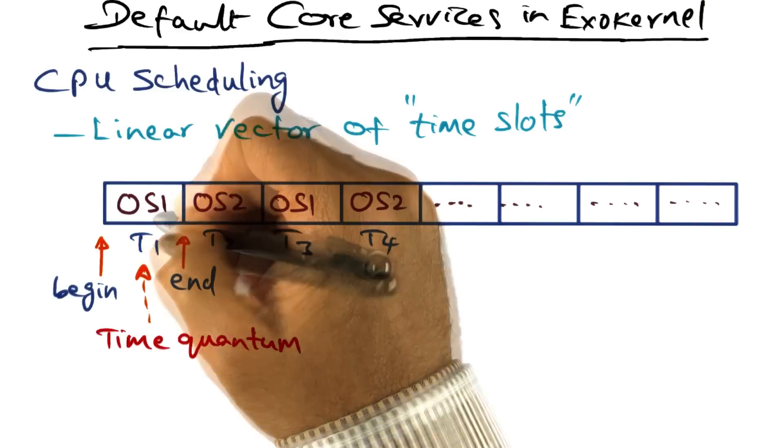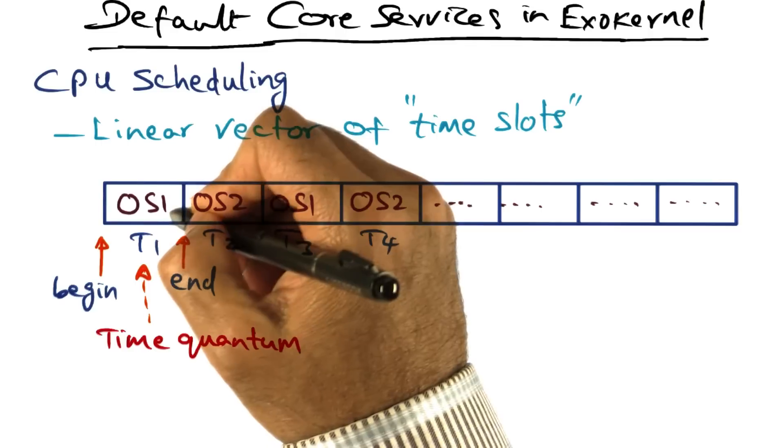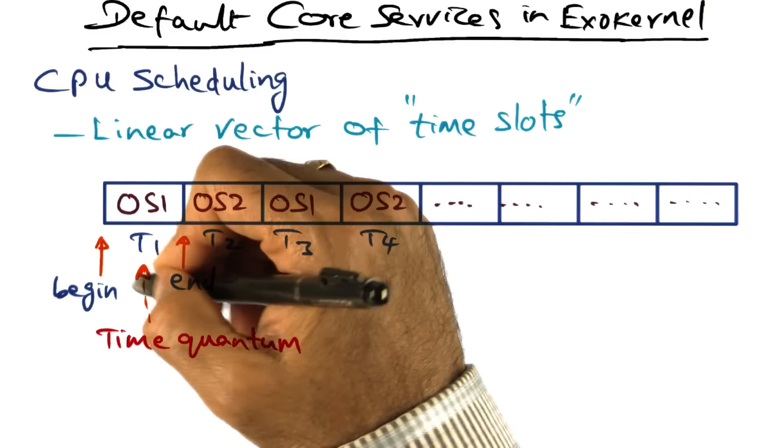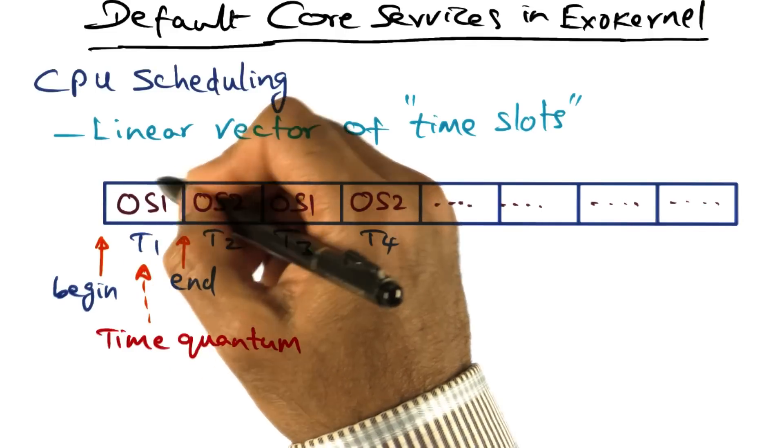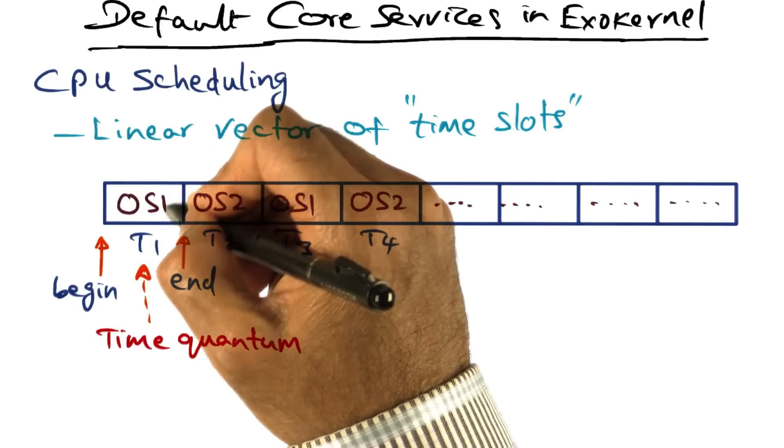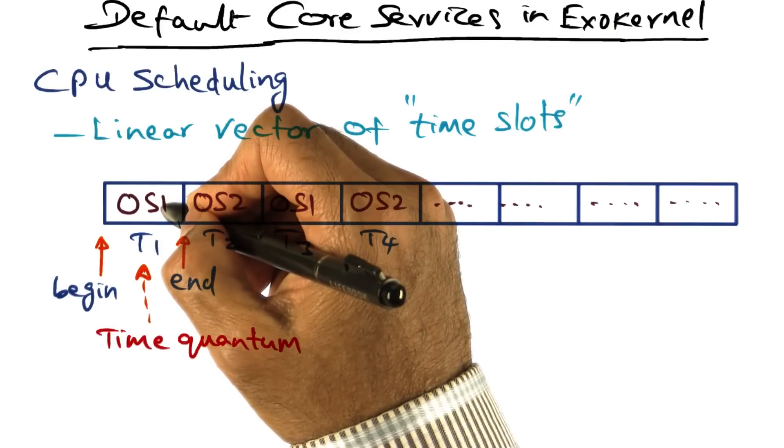During this time quantum, OS1 has complete control of the processor, and exo-kernel is not going to get in the middle of it unless a process that is running on behalf of OS1 incurs a page fault.